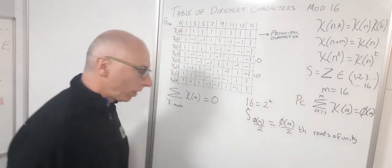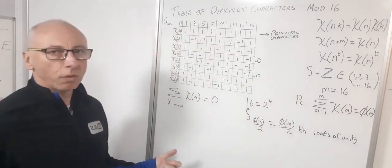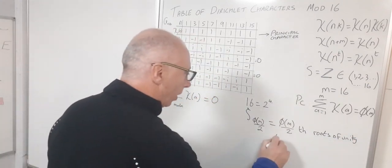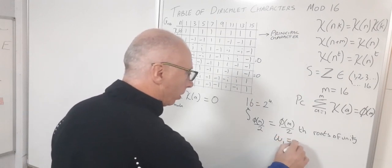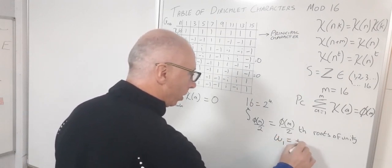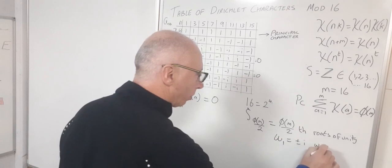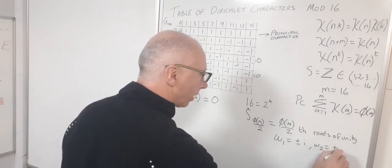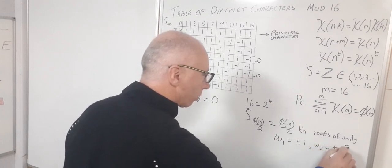Basically what that will give us is four values: we'll have omega 1 which will equal plus or minus i, and omega 2 will equal plus or minus i squared.